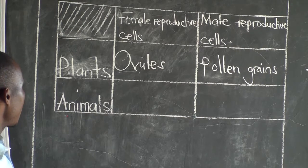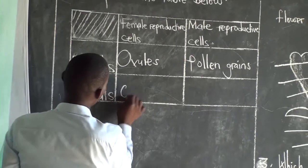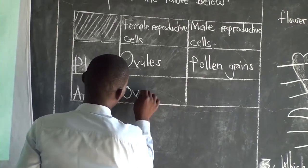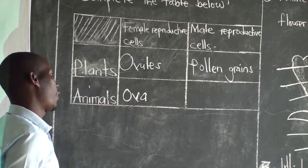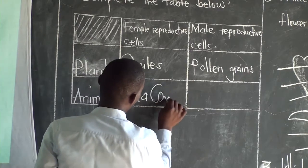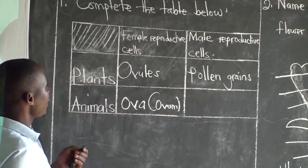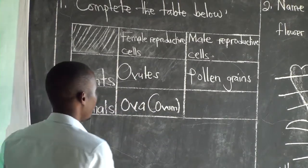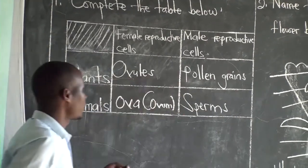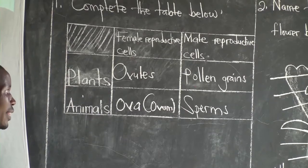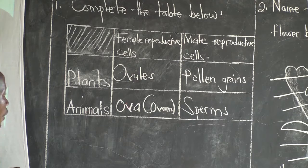When you compare to animals, the female reproductive cells will be called ova — in singular, ovum. And the male reproductive cells in animals are sperm. So in female animals, they will be ovum.